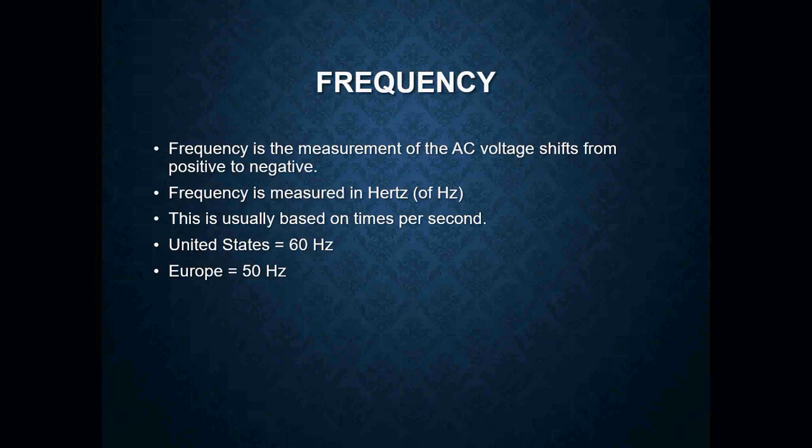Frequency is how we measure AC voltage shifting from positive to negative. Frequency is measured in hertz, which is based on times per second. In the United States we deal with 60 hertz, while in Europe they have 50 hertz.